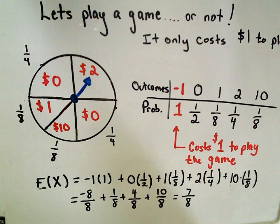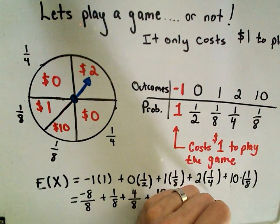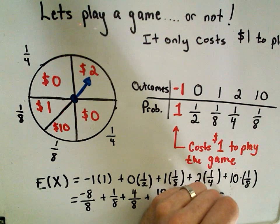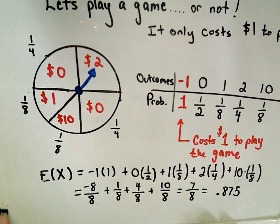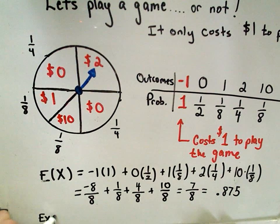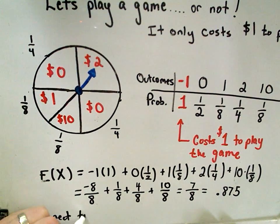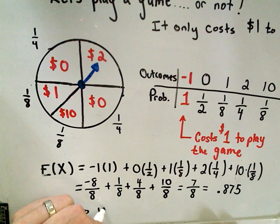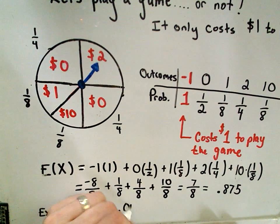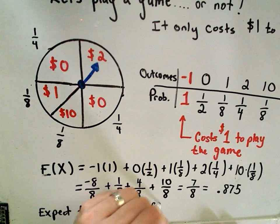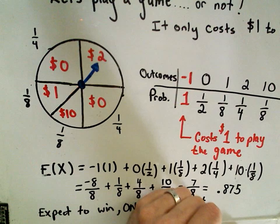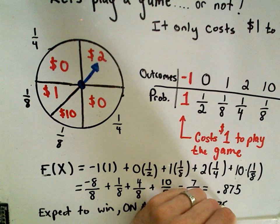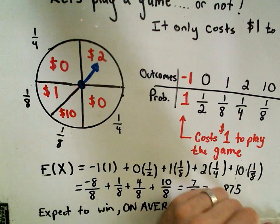And the important thing here is what does this mean? Okay, so 7-eighths is the number 0.875. So what it says is, it says you can expect to win, on average, this is the important part, you can expect to win, on average, 87.5 cents per game.